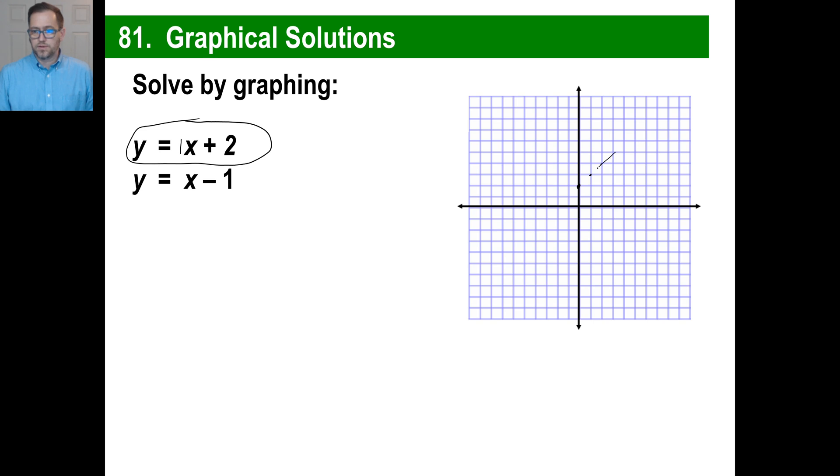The one on the bottom is y is equal to x minus 1. So there's your y-intercept right here. And it's the same slope, right? So 1 over 1, 1 over 1, 1 over 1. And you notice that these are parallel, if you draw them correctly.